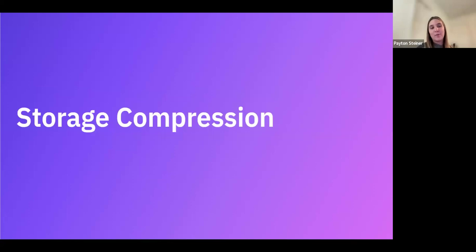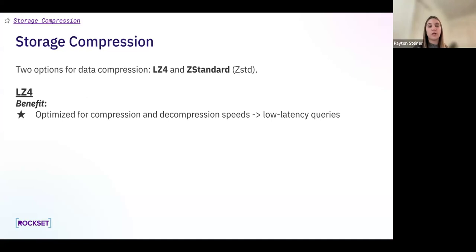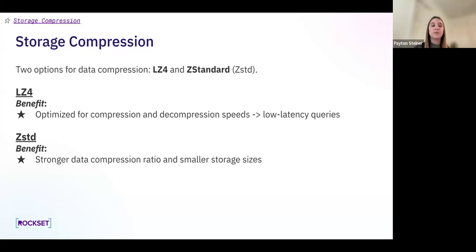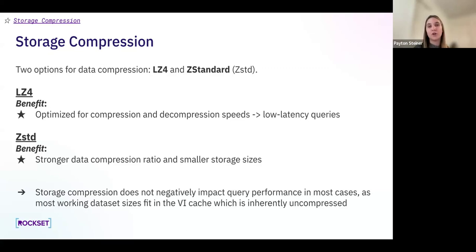The last storage concept is storage compression. We have two options: LZ4 and Z-Standard. LZ4 is optimized for compression and decompression speeds, giving you lower latency queries. Z-Standard provides a stronger data compression ratio, giving you smaller storage sizes. In most cases, storage compression does not negatively impact query performance, as most working datasets fit in the VI cache, which is inherently uncompressed. Please refer to our documentation if you want to learn more.